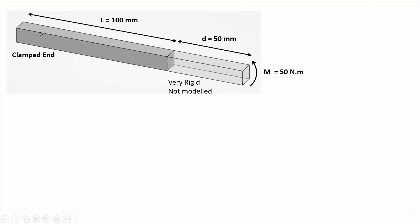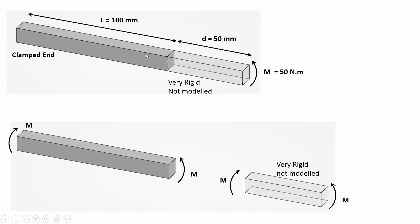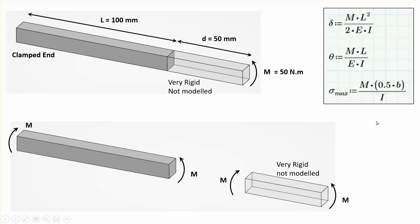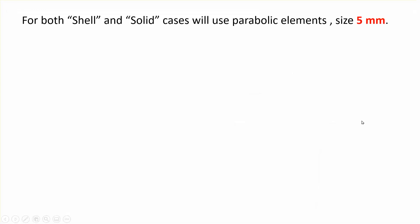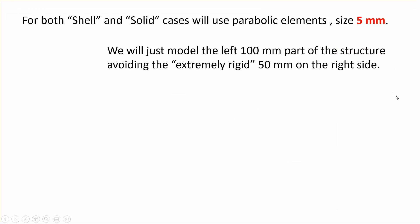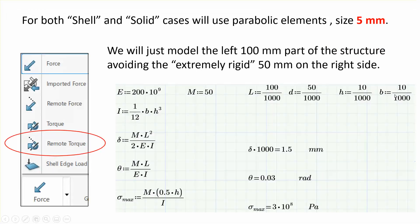I've redrawn the free body diagram. If I separate the two pieces from each other, the only thing keeping it in equilibrium is the moment. So basically, I don't have to model the entire right-hand side. Looking at elementary strength of materials, the deflection and maximum stress at the part of length L are given by standard expressions. We're going to compare our results with these. I'm going to do both solid elements first, then shell elements.